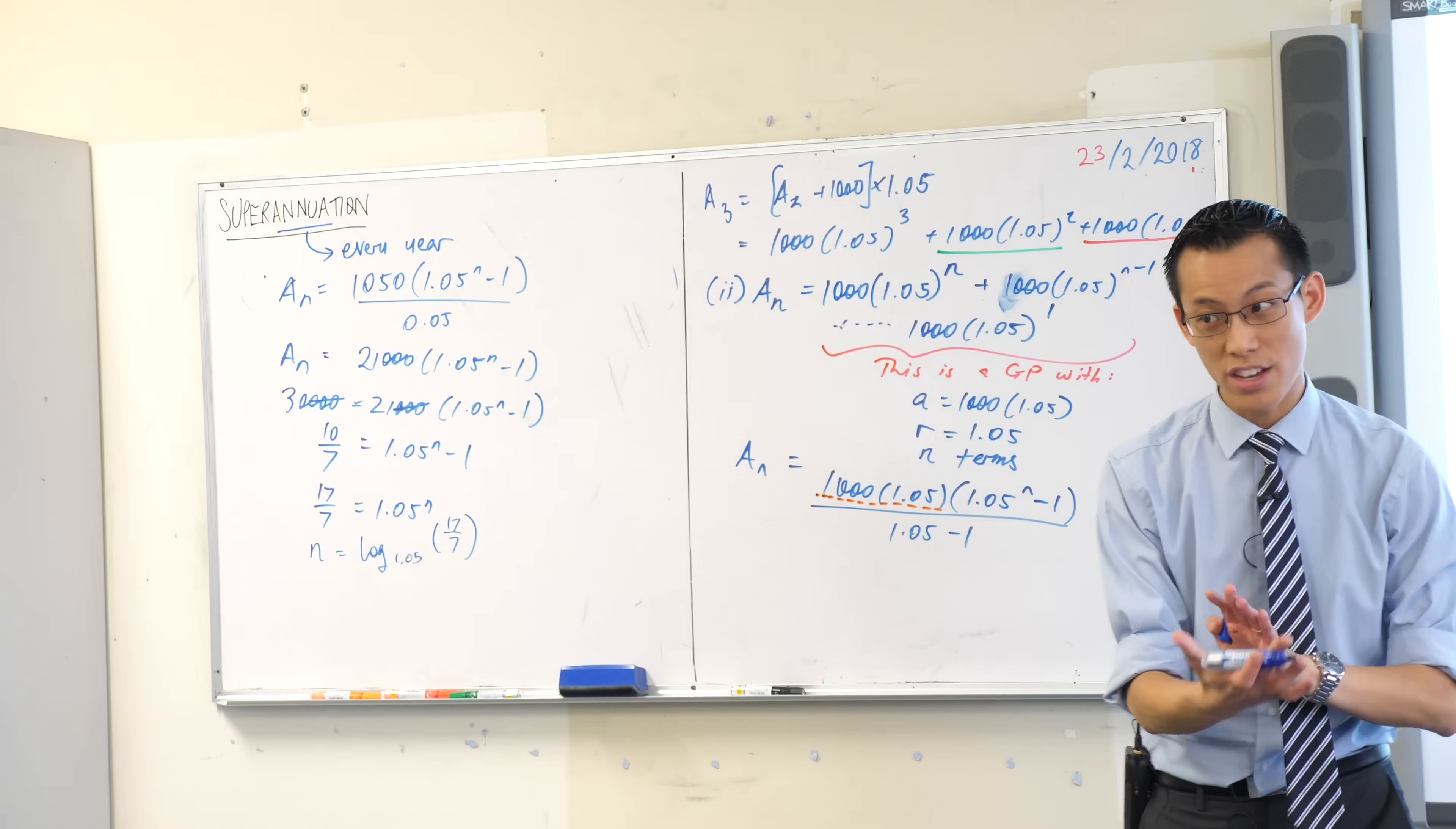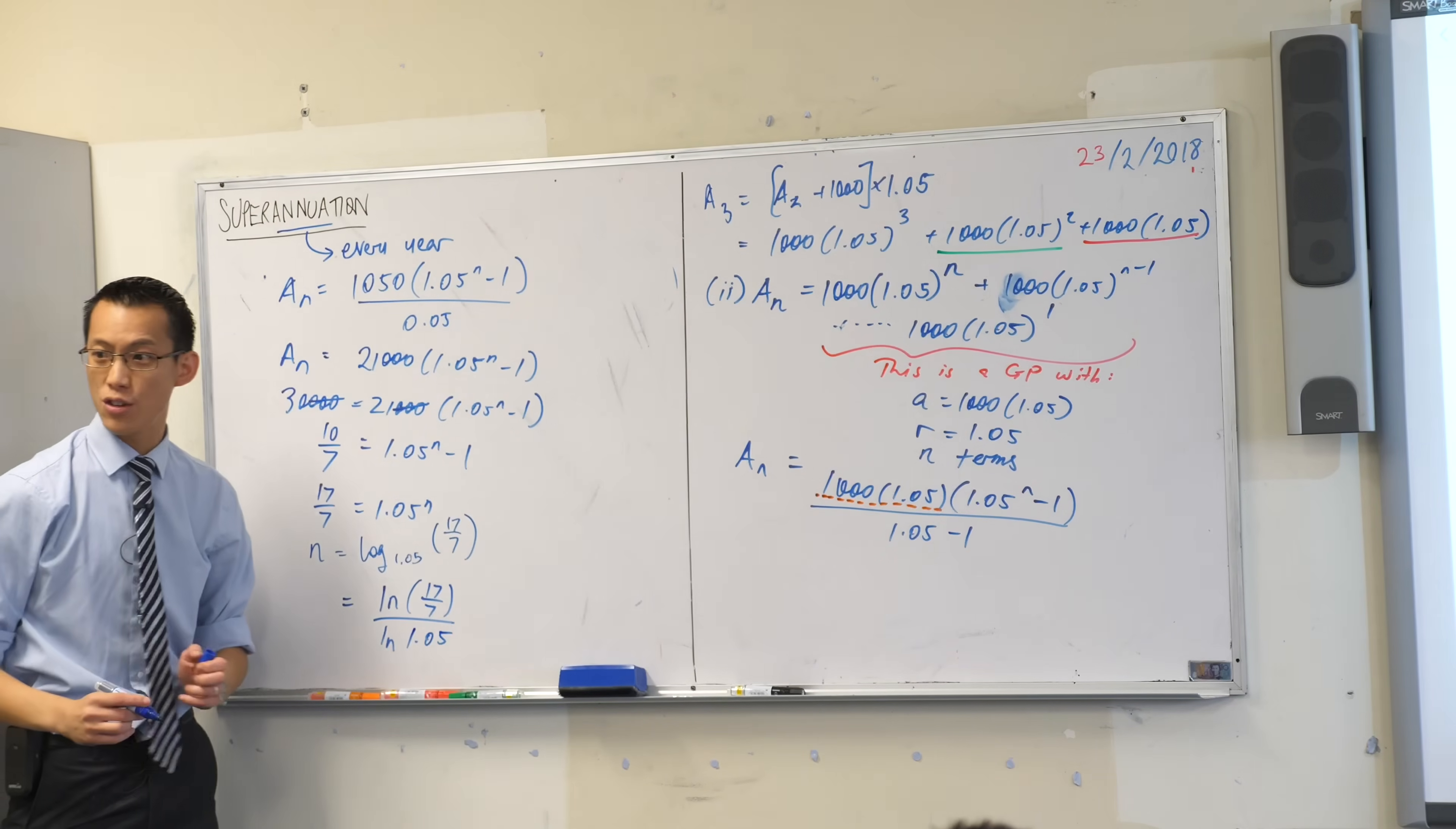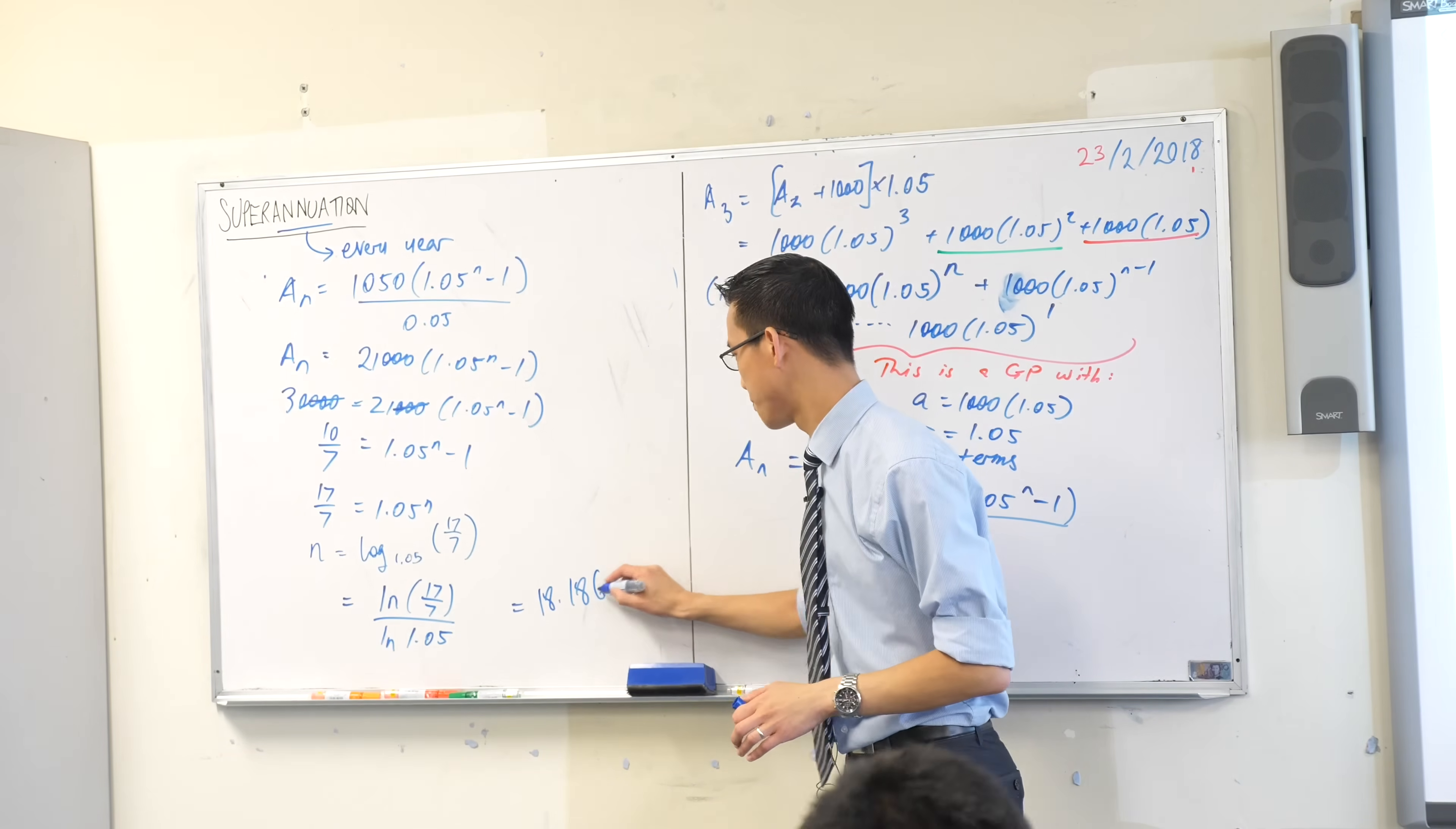You have a calculator. You can use change of base law. I'm going to choose base E because I'm lazy and I like to write ln. And your calculator is going to hand you something out of this, because I certainly don't know the answer. Has someone got a number? Can I have some decimal places? 18.186. Okay.